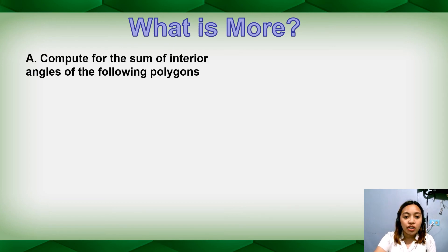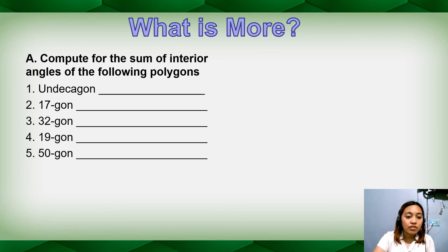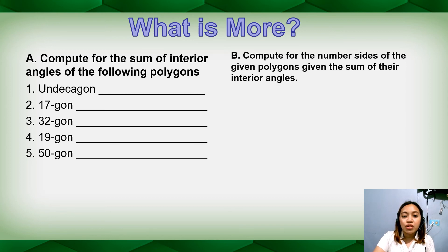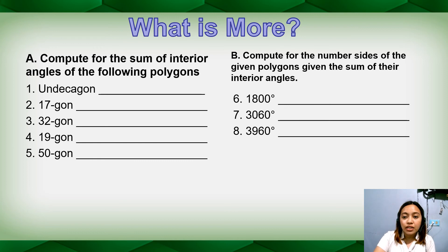For your tasks — 'What is More': Part A, compute the sum of interior angles of the following polygons using the formula (n − 2) × 180: number 1 a decagon, number 2 a 17-gon, number 3 a 32-gon, number 4 a 19-gon, and number 5 a 50-gon. Part B, compute the number of sides of polygons given the sum of interior angles using the formula n = S/180 + 2: number 6 is 1,800°, number 7 is 3,060°, number 8 is 3,960°.